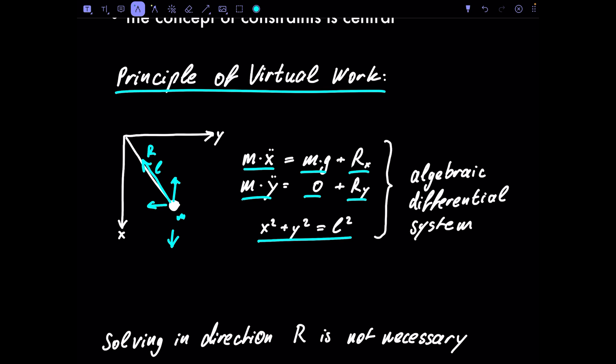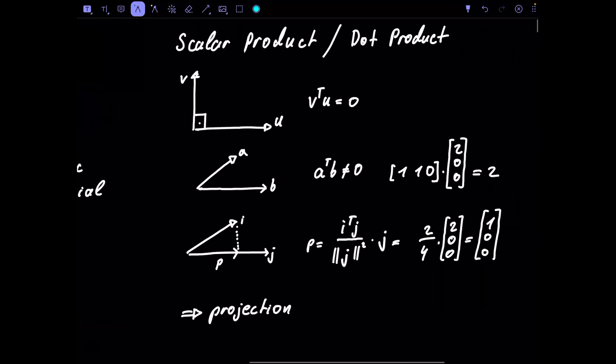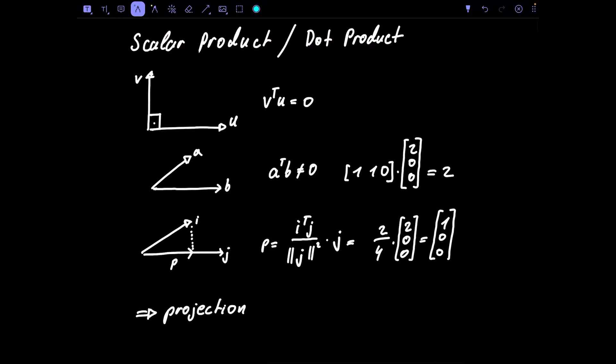These three equations form an algebraic differential equation system. We have differential equations from x-double-dot and y-double-dot, plus an algebraic constraint that must also be considered when solving. For such a seemingly simple system, this is already a very difficult way to get the equations of motion. We want to find a simpler way — and this is exactly where the principle of virtual work helps us. But first we need to discuss the scalar product, or dot product.